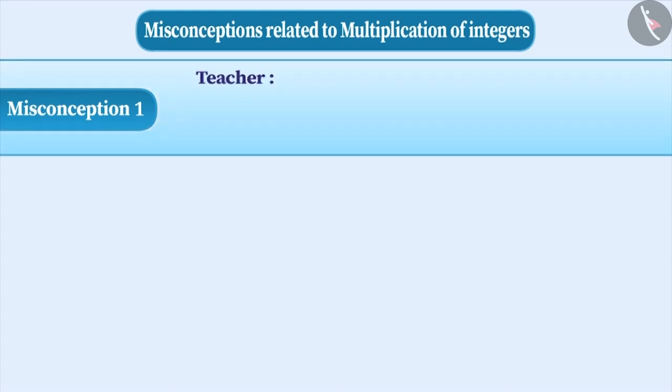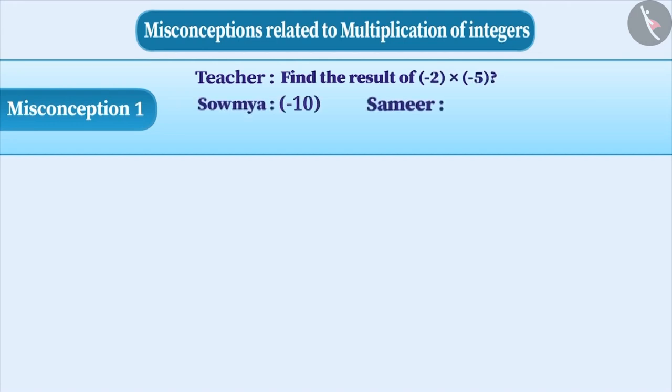While teaching multiplication of integers, the teacher asked this question: Find the result of minus 2 into minus 5. Soumya has given minus 10 as an answer and Samir has given 10 as an answer. Who gave the correct answer according to you?